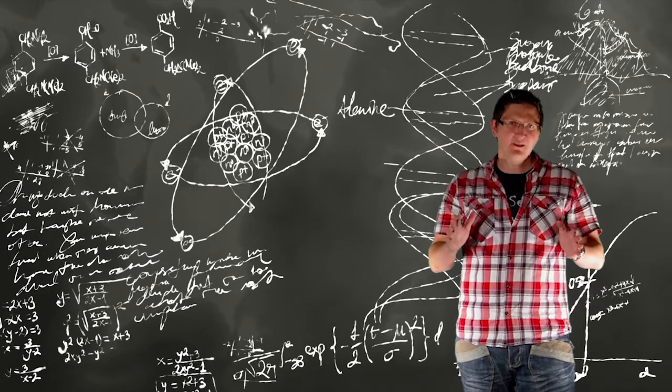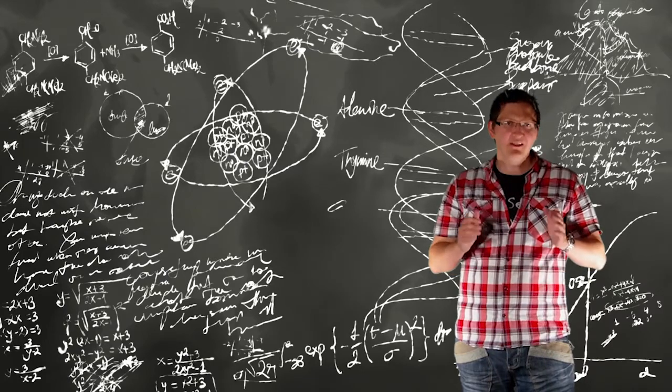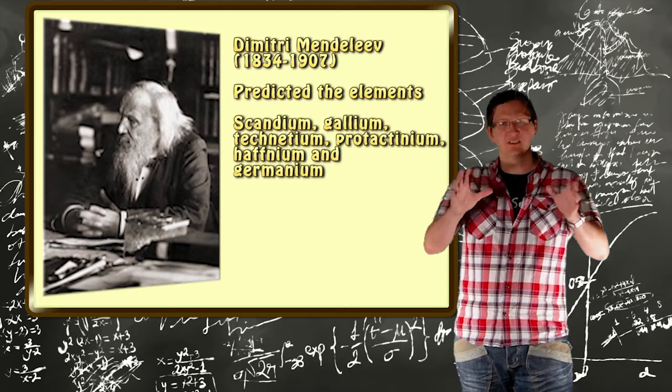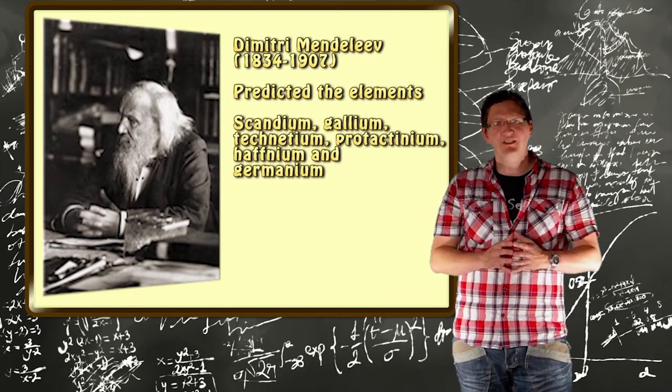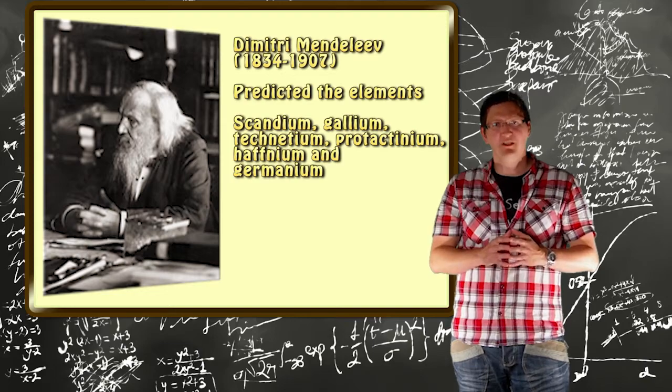The periodic table as we know it today was put together by a Russian chemist called Dmitry Mendeleev, who in 1869 noticed that the reactivity of elements could be classified together in groups and periods.